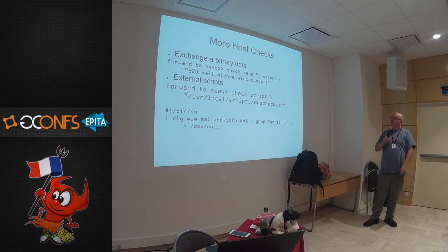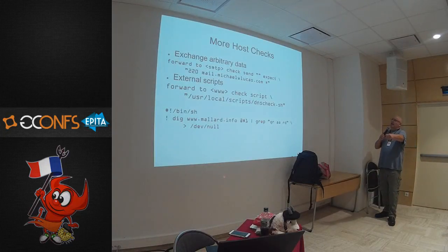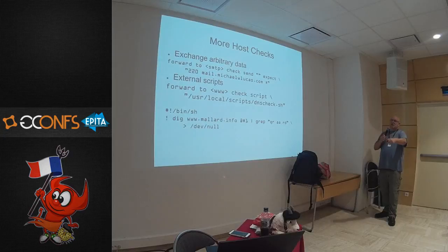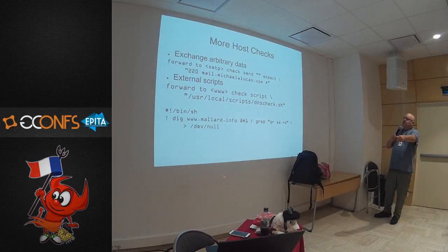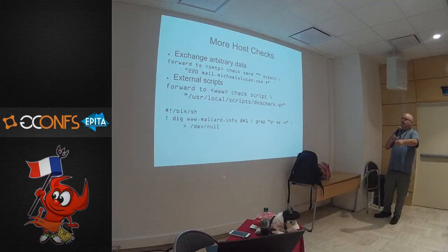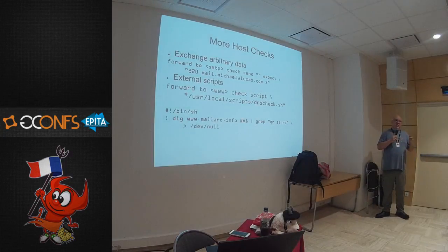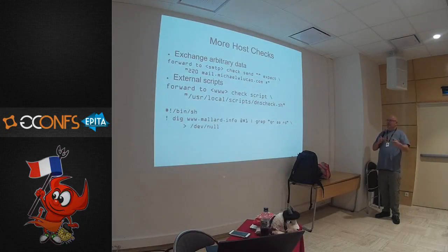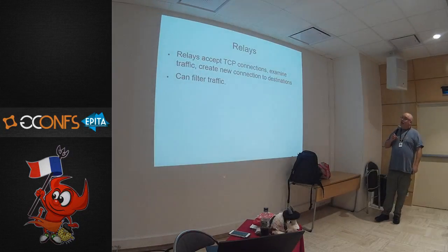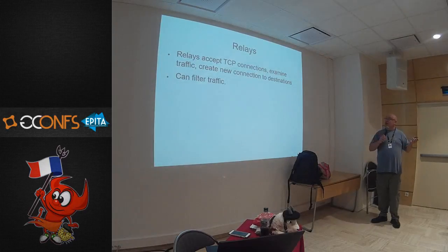You can do things like forward to a mail server: send an empty string and expect '220 mail.michaelwlucas.com' — is my mail server working? Keep it in the pool or not. Here's a script to check a DNS server: dig a domain name, grep for the string that means there's an authoritative answer, invert the return code and send it back. If the DNS server is serving authoritative data, keep it in the pool. Relays accept TCP connections, accept traffic, create new connections, forward them on, and can filter the traffic.